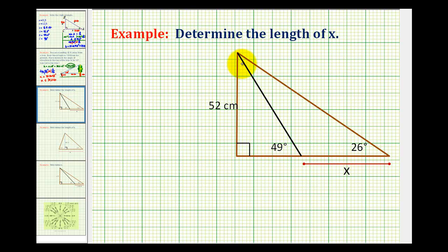We have this smaller right triangle here, and then we have this larger right triangle here. So we're actually going to have to set up and solve two different trig equations to determine the length of x.